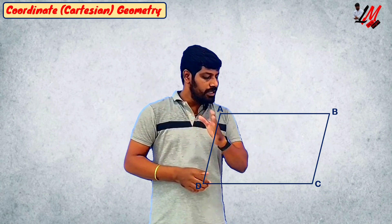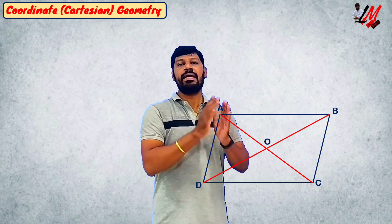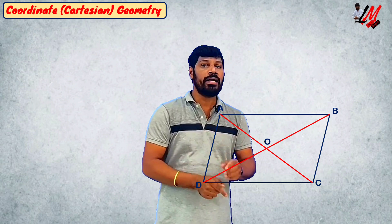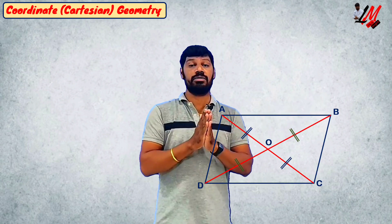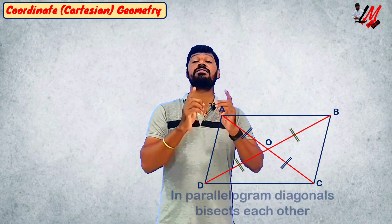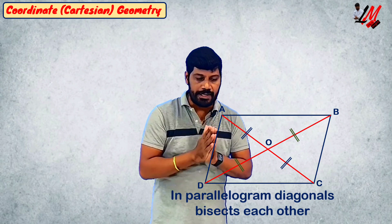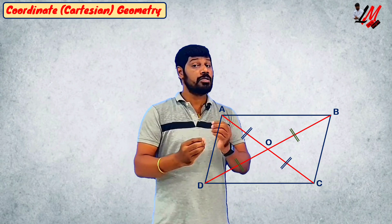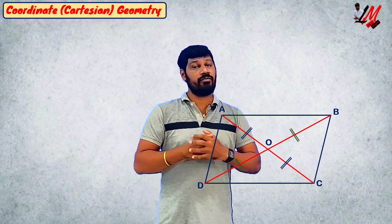Now, in a parallelogram, the diagonals bisect each other at a center point. The midpoint of diagonal AC and the midpoint of diagonal BD are the same point. That is, opposite diagonals bisect each other.